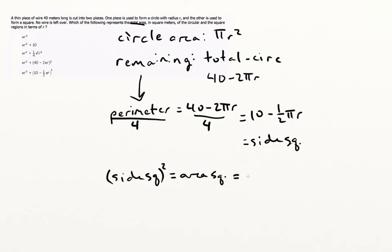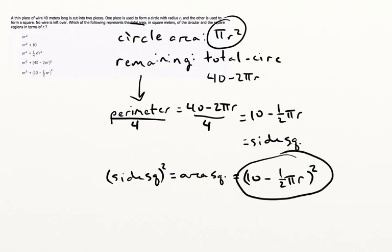So that's going to be this part, 10 minus 1 half pi r, just that quantity, squared. So the circle area is pi r squared. The square area is quantity 10 minus 1 half pi r squared. So our answer, of course, is E, for the total area of both the circle and the square.